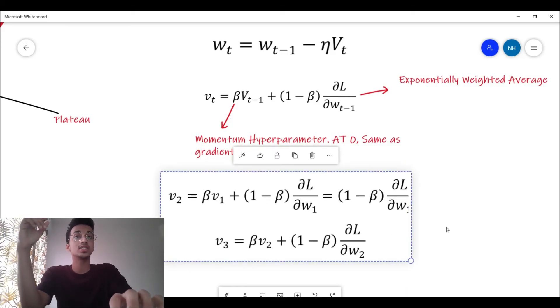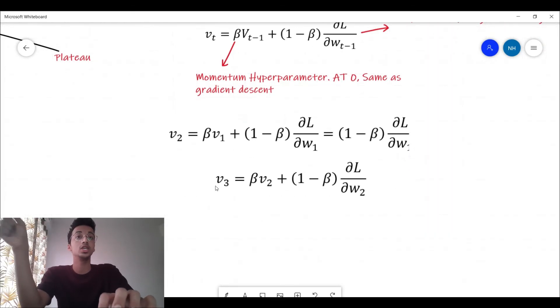For the next updation you can similarly calculate v_3 equals β into v_2 plus (1 - β) into change of loss with respect to the second weight. Basically what happens is as we keep getting v_3, v_4, v_5, this will contain the value of all the previous loss, because v_3 contains information of loss with respect to the second weight and v_2 in turn contains information of change in loss with respect to the first weight.